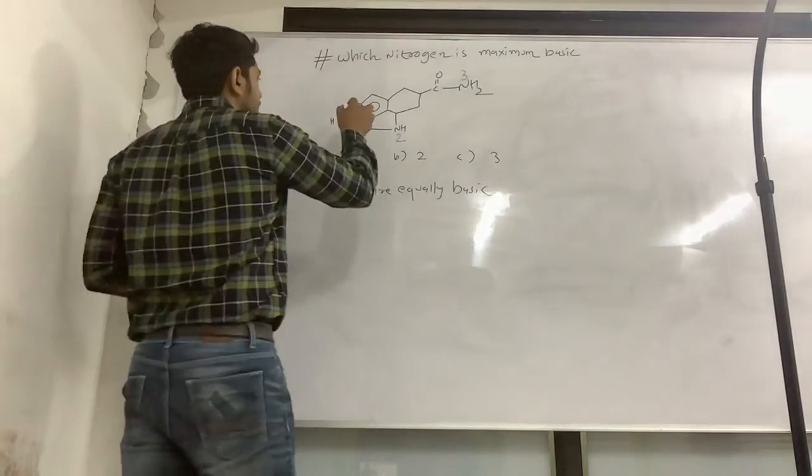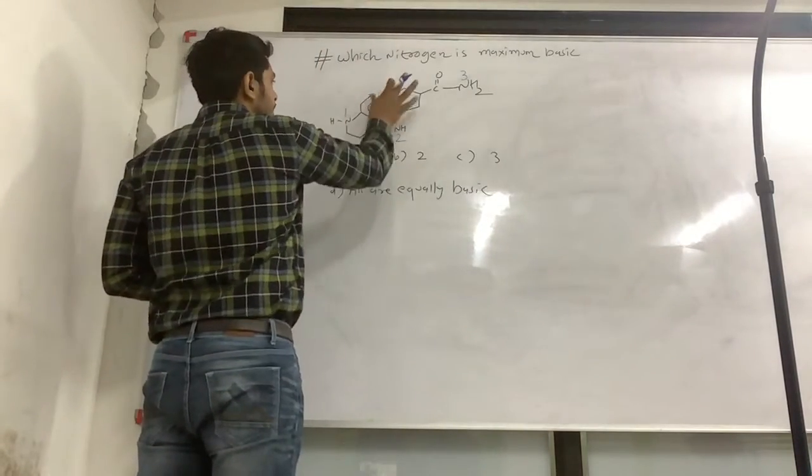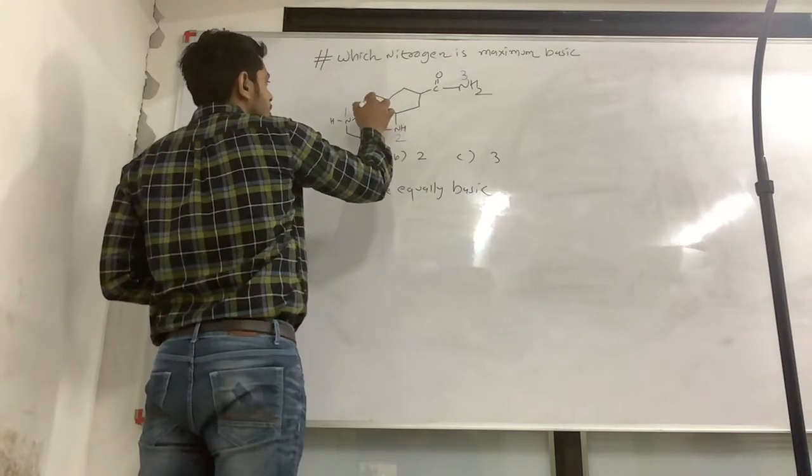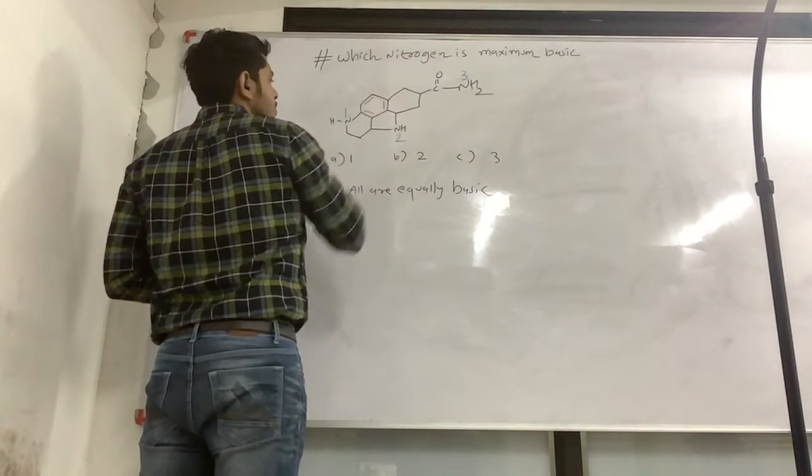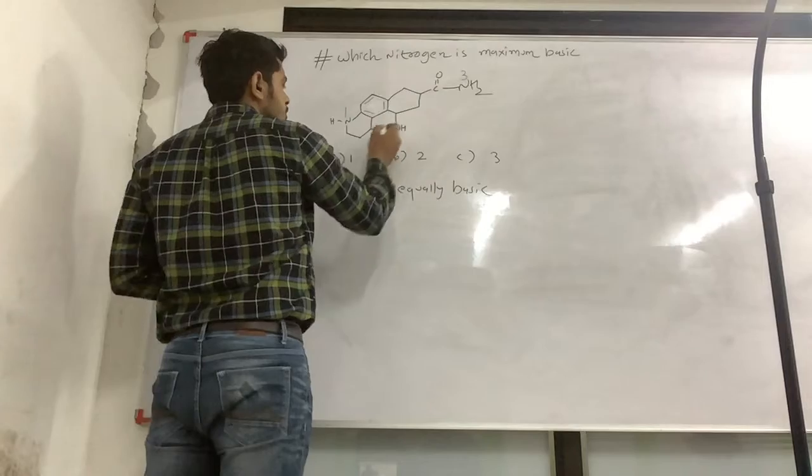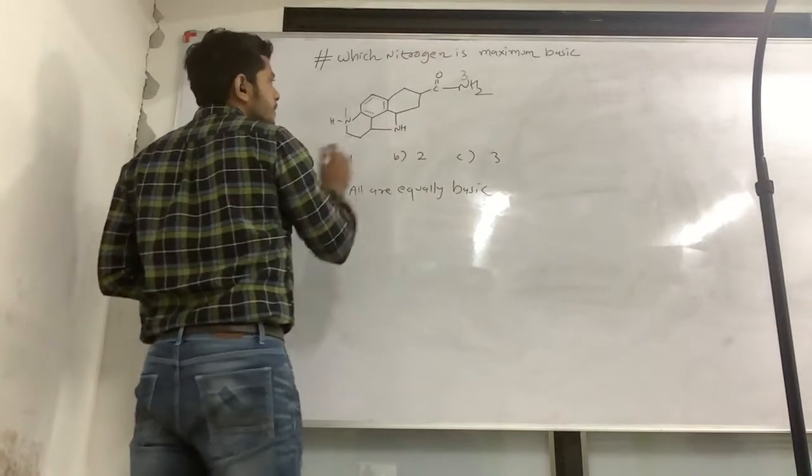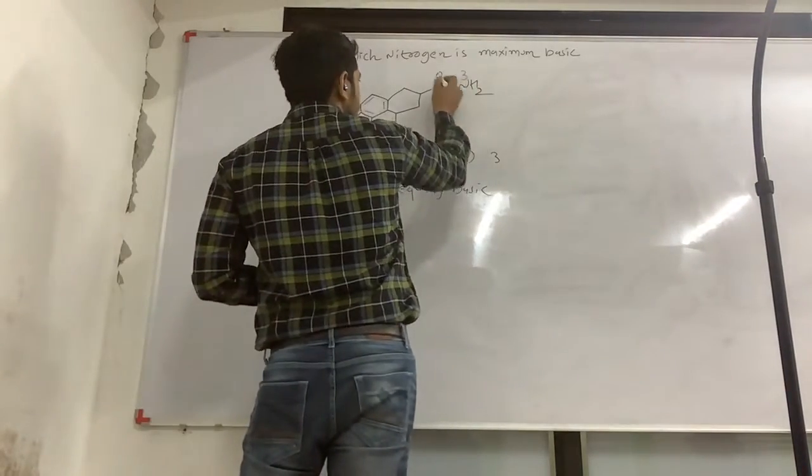So the nitrogen nitrogen is a single bond. Then you can see here the double bond. This nitrogen is a single bond. This nitrogen is a single bond, then the double bond.